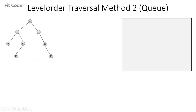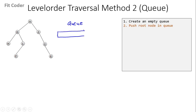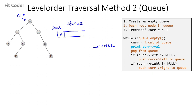The second method uses a queue. First we create an empty queue, then push the root node A into it. We keep a variable current initialized to null. While the queue is not empty, current becomes equal to the front of the queue — which is A. We print A, pop from the queue, then check if left of current (which is D) is not null — we push D — and if right of current (which is Z) is not null — we push Z.